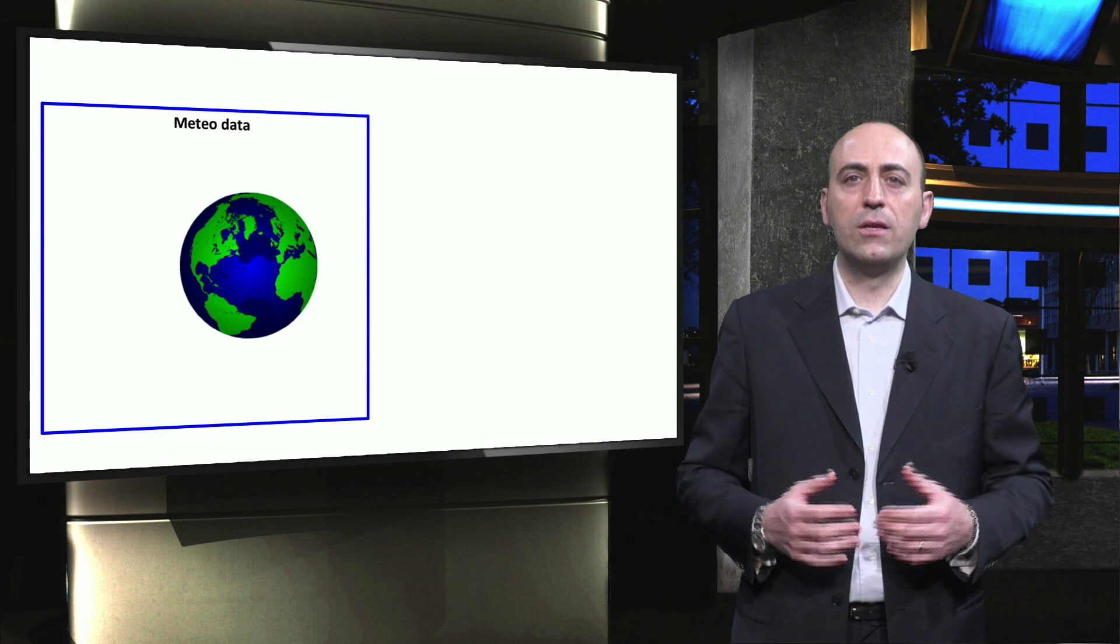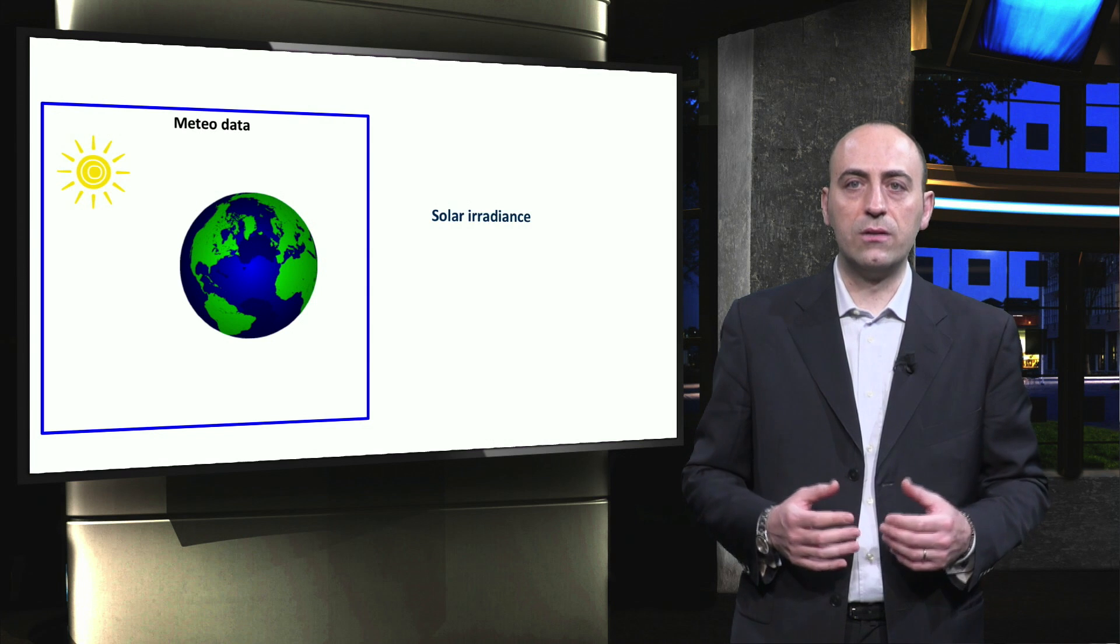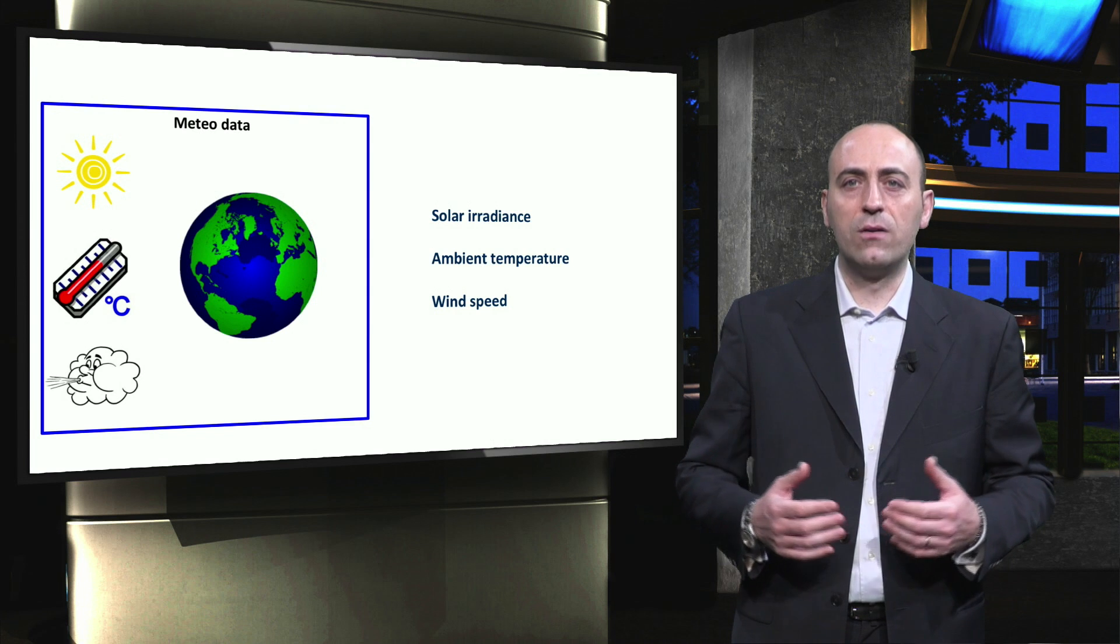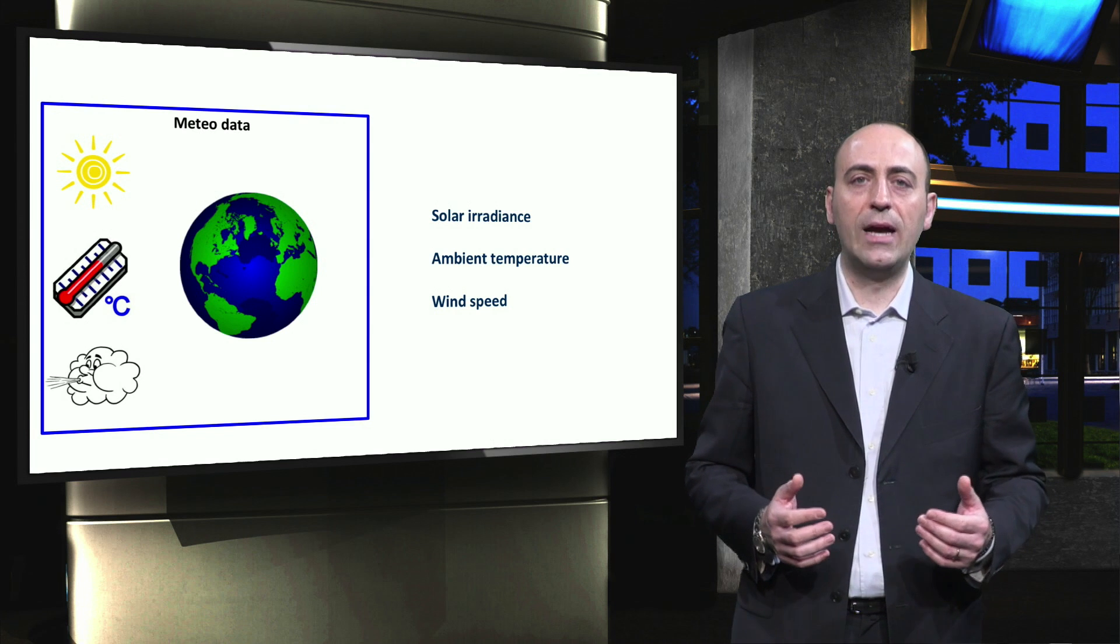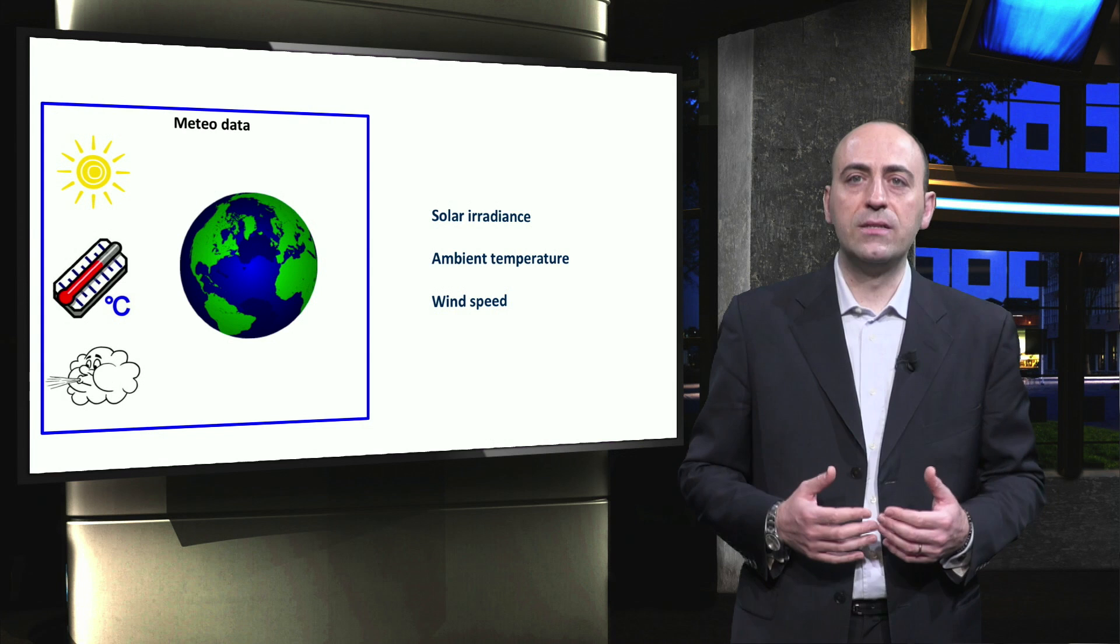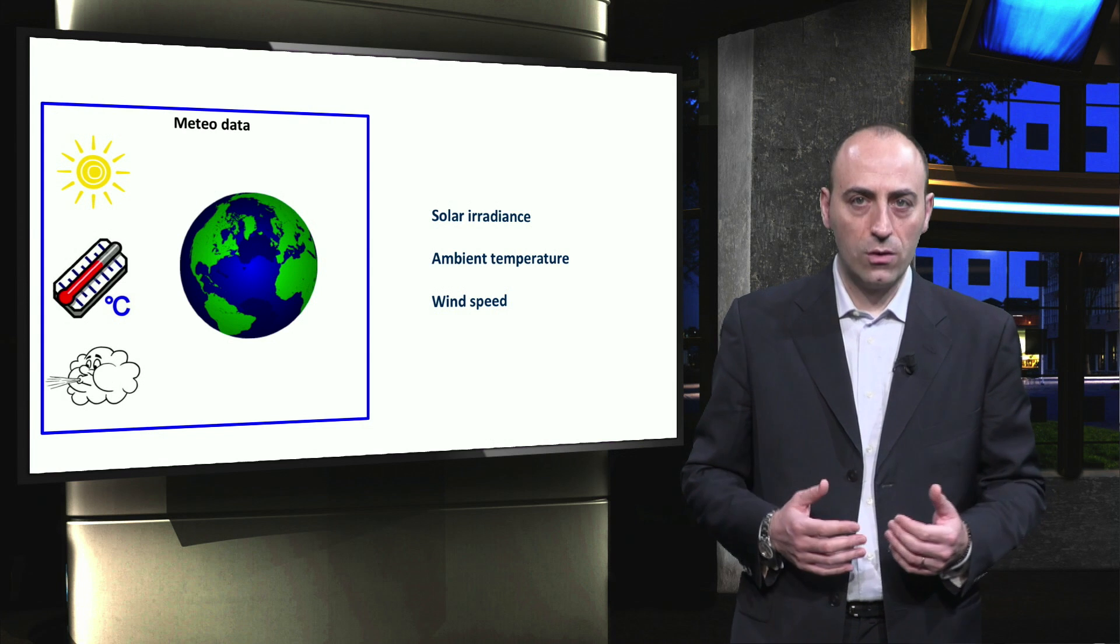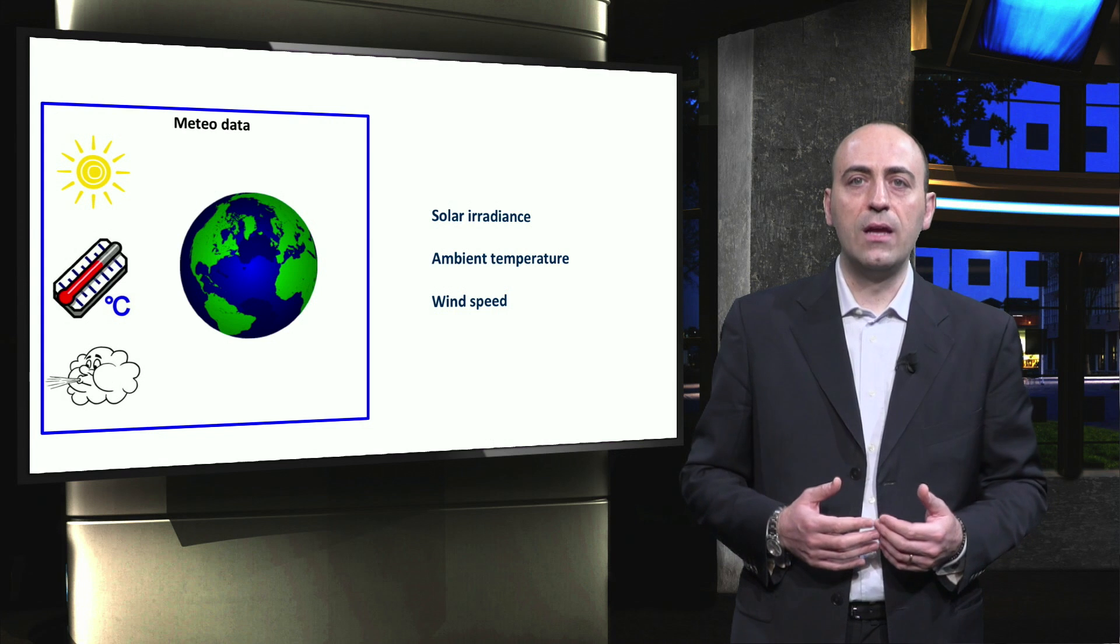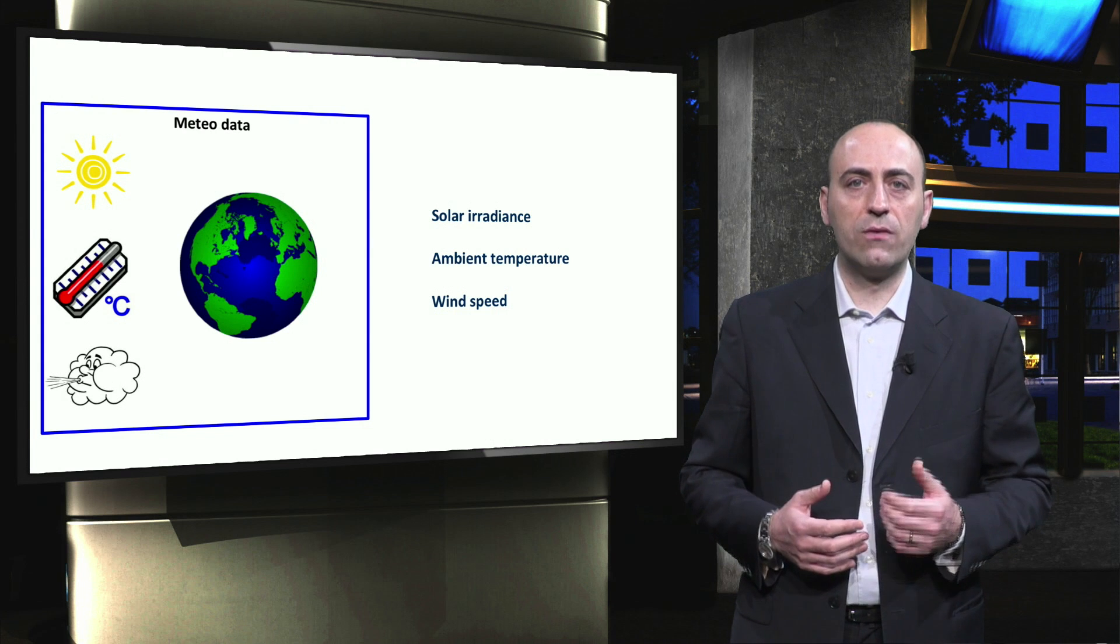Important meteorological parameters are the solar irradiance, the ambient temperature, and the wind speed. There are a number of meteorological databases available online. Some global databases provide free meteorological data such as PVGIS Solar Database and NREL National Solar Radiation Database.